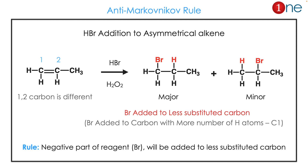In this situation, we are adding bromine to an alkene which contains two different carbon atoms. Bromine will add to the less substituted carbon — that is, the carbon containing the greater number of hydrogen atoms.